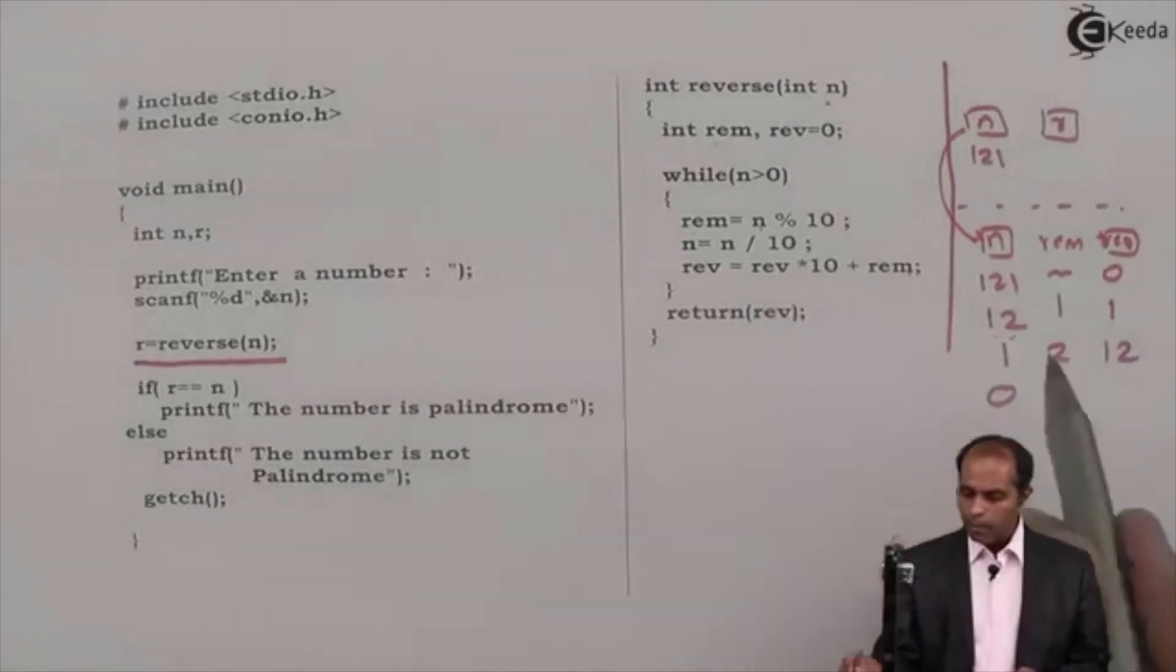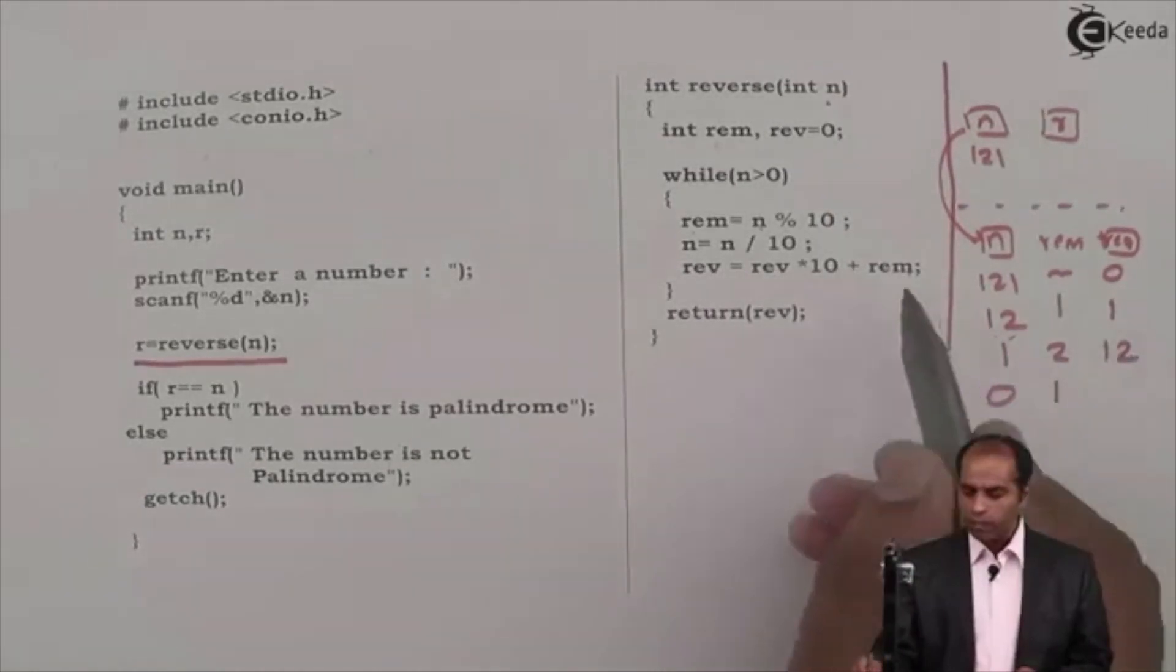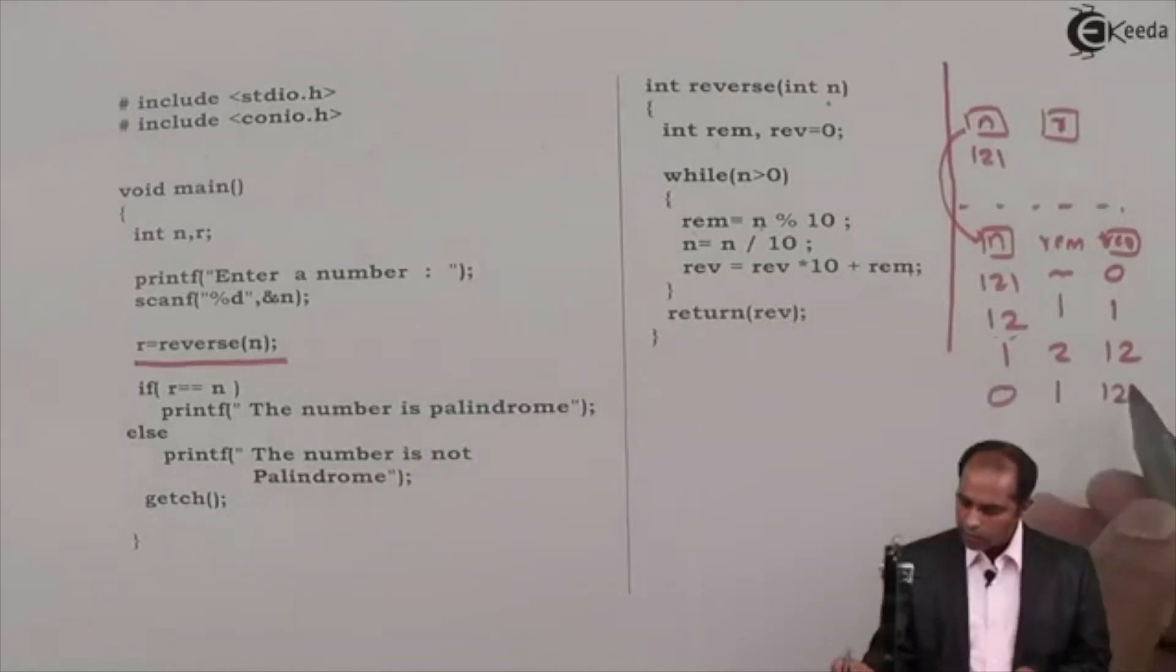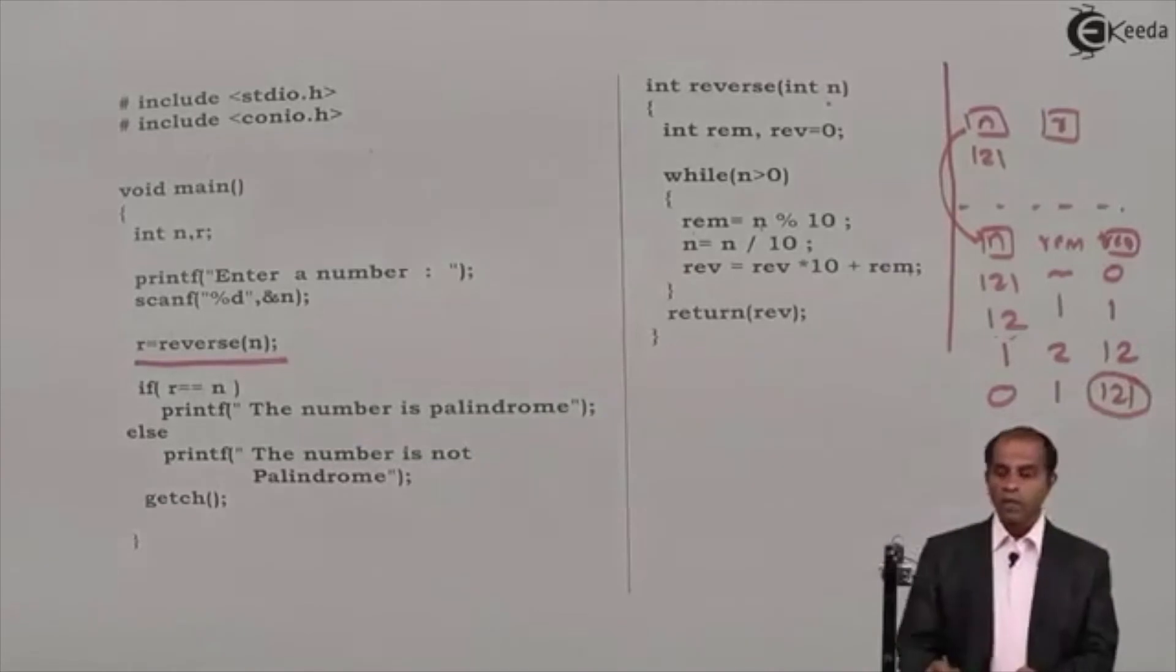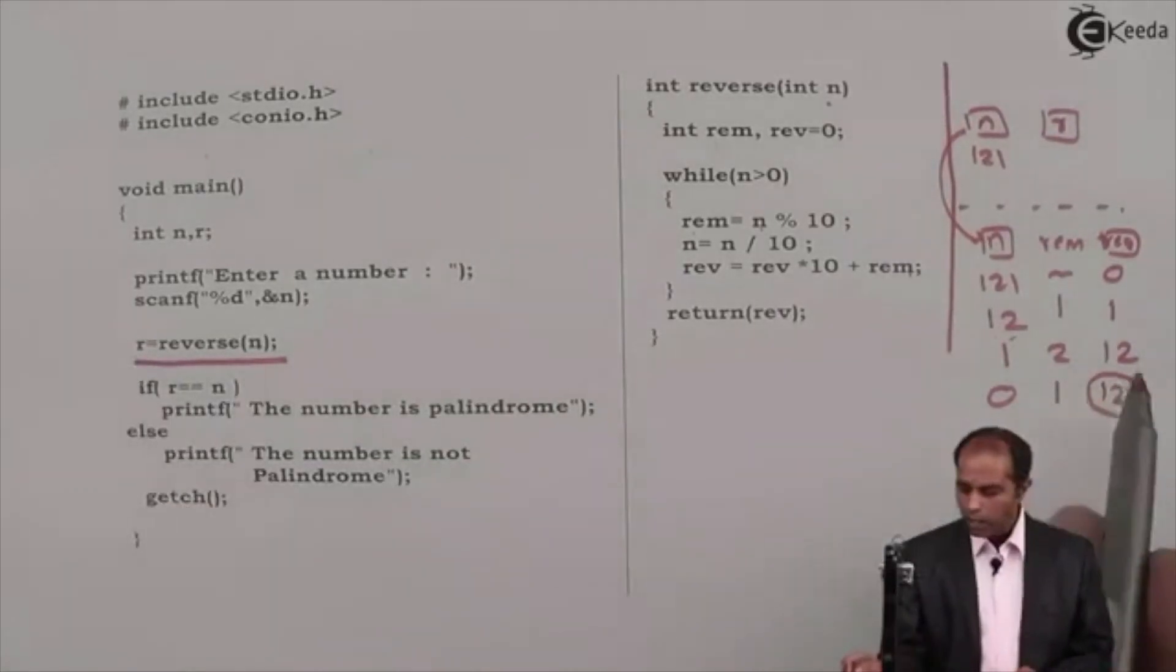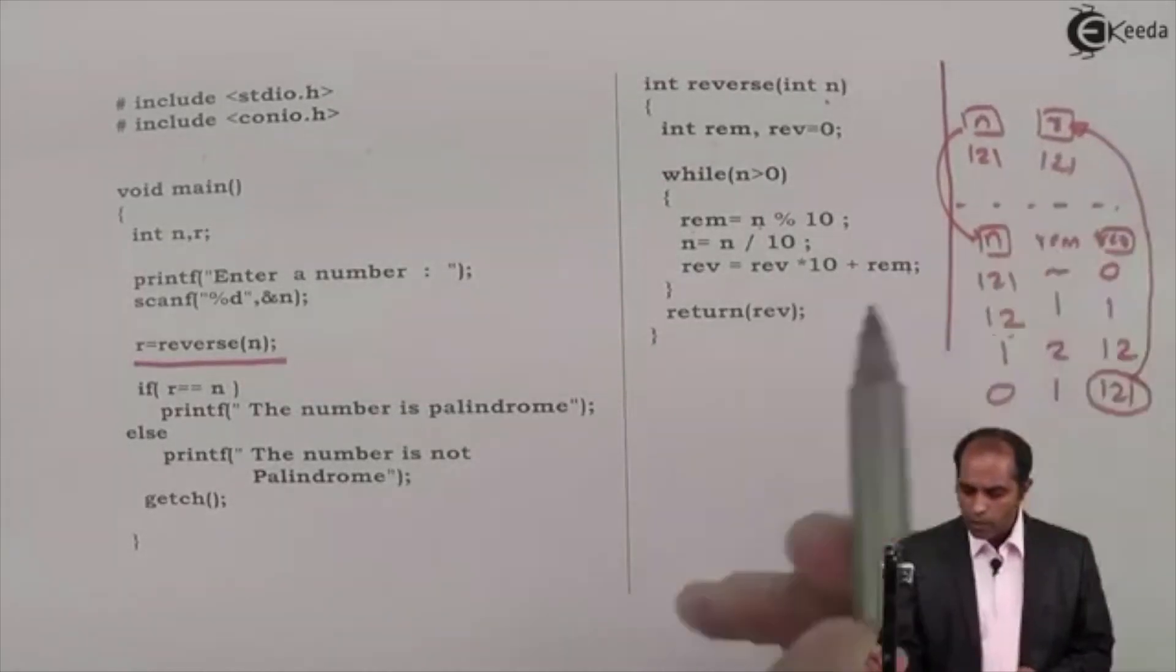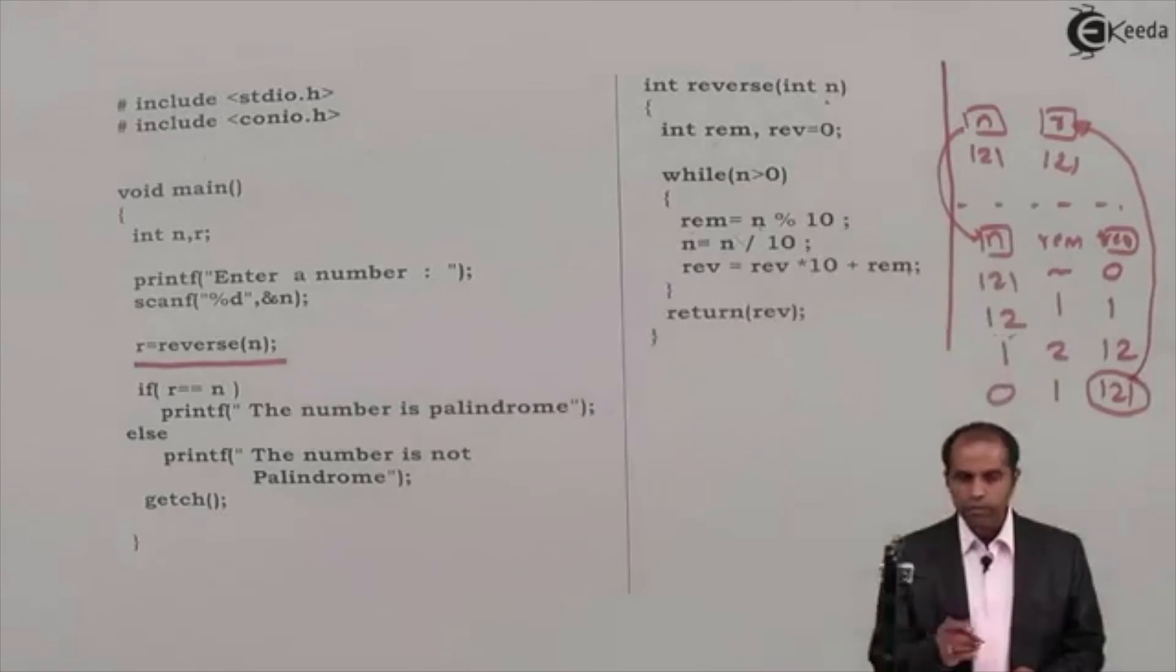12 rev multiplied by 10. 12 into 10 is 120 plus rem, that is 1, return rev. Rev is what? 121. Where this 121 has to be returned? This 121 has to be returned to r. So this 121 goes back to r at this place and after that all the variables which have been declared in the function are going to be destroyed.